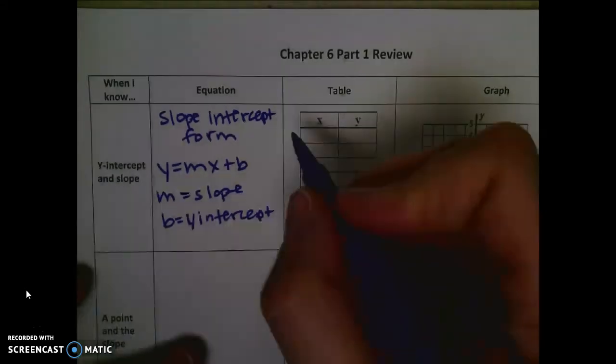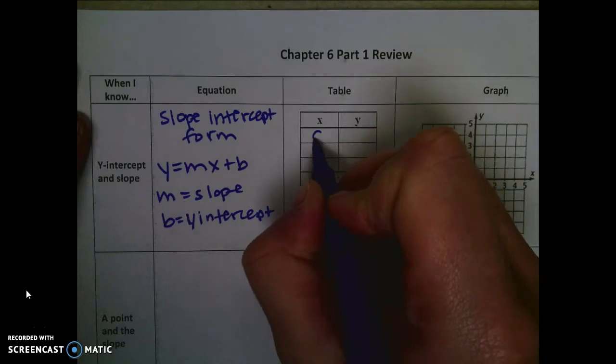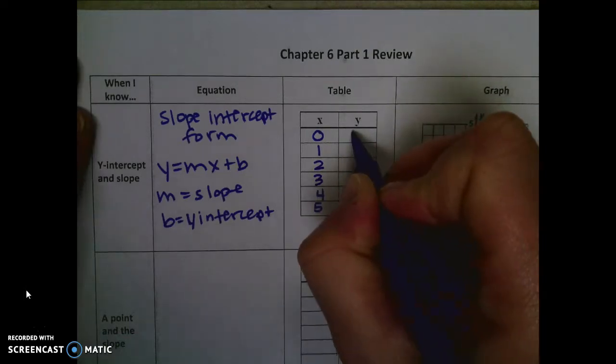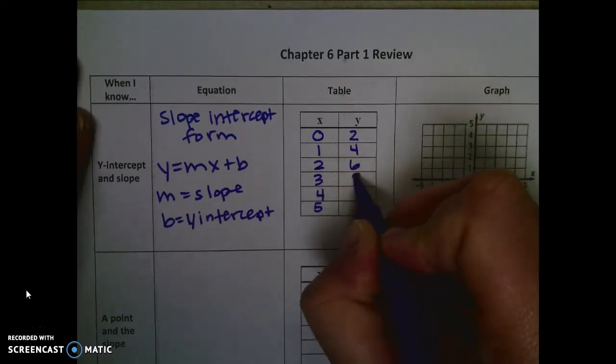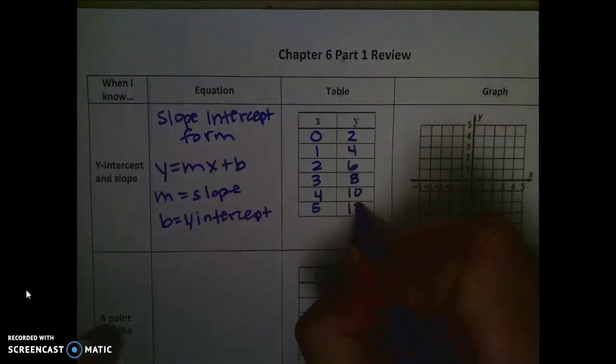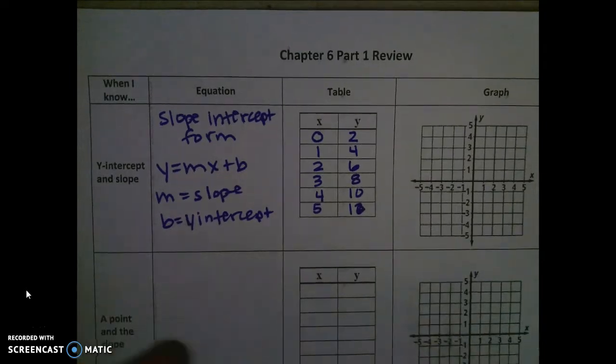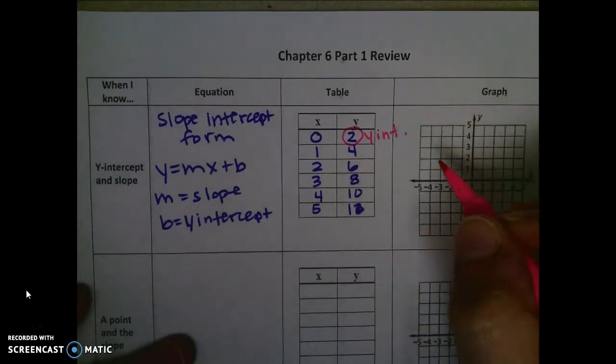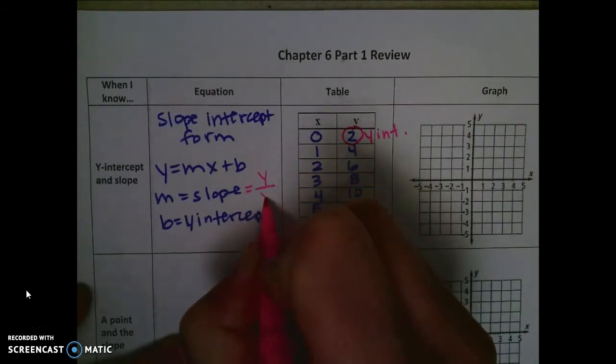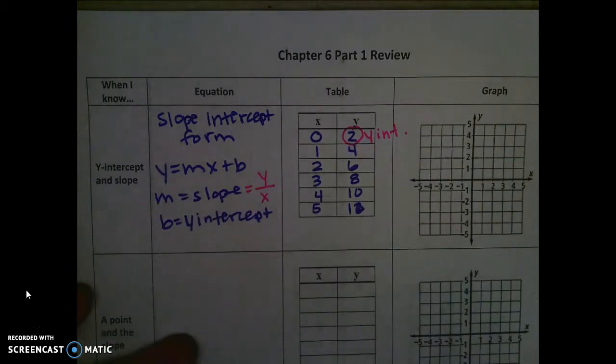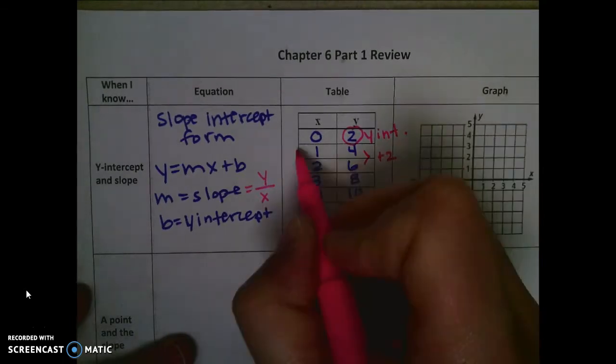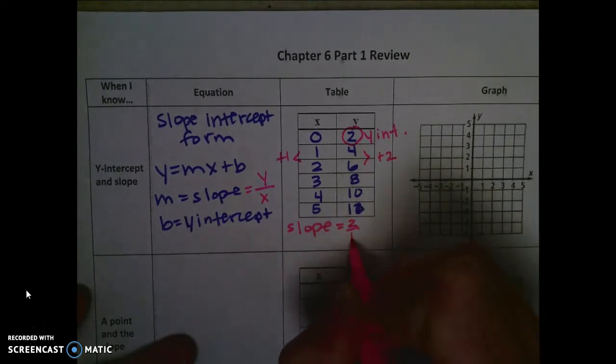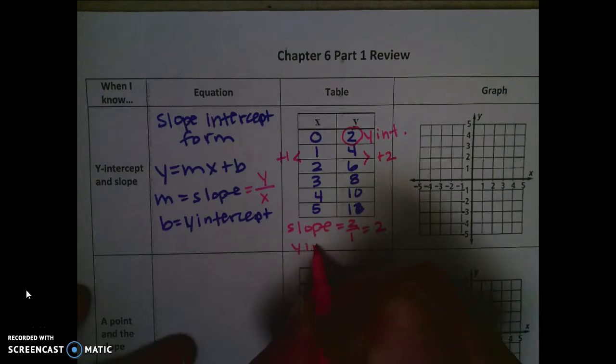On the table, the y-intercept is where x equals 0. So let's say your table goes like this, and let's say the y-intercept is 2. So our y-intercept is 2. And then the slope is the rise over the run or the change in y over the change in x. So our slope is plus 2 on the y-side plus 1 on the x-side. So our slope would be 2 over 1, which is 2. And our y-intercept would also be 2.